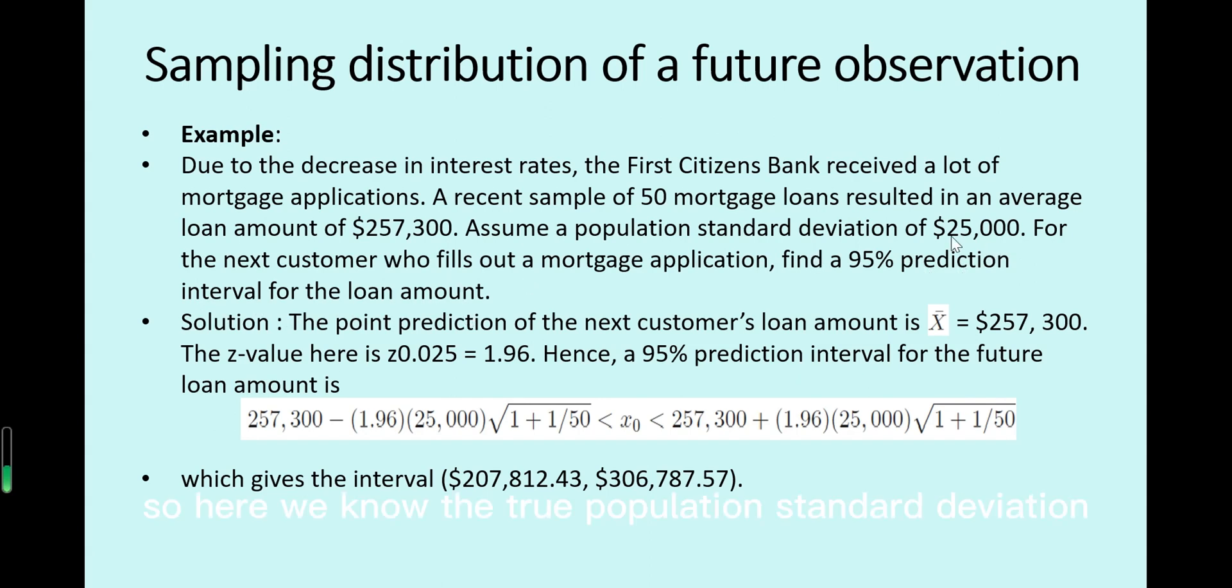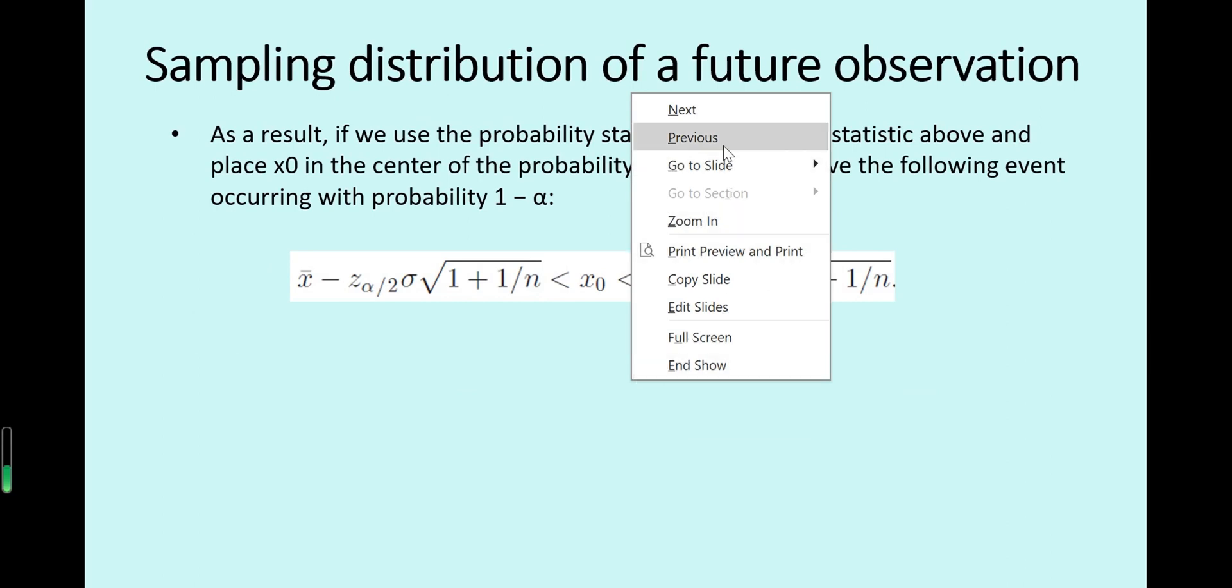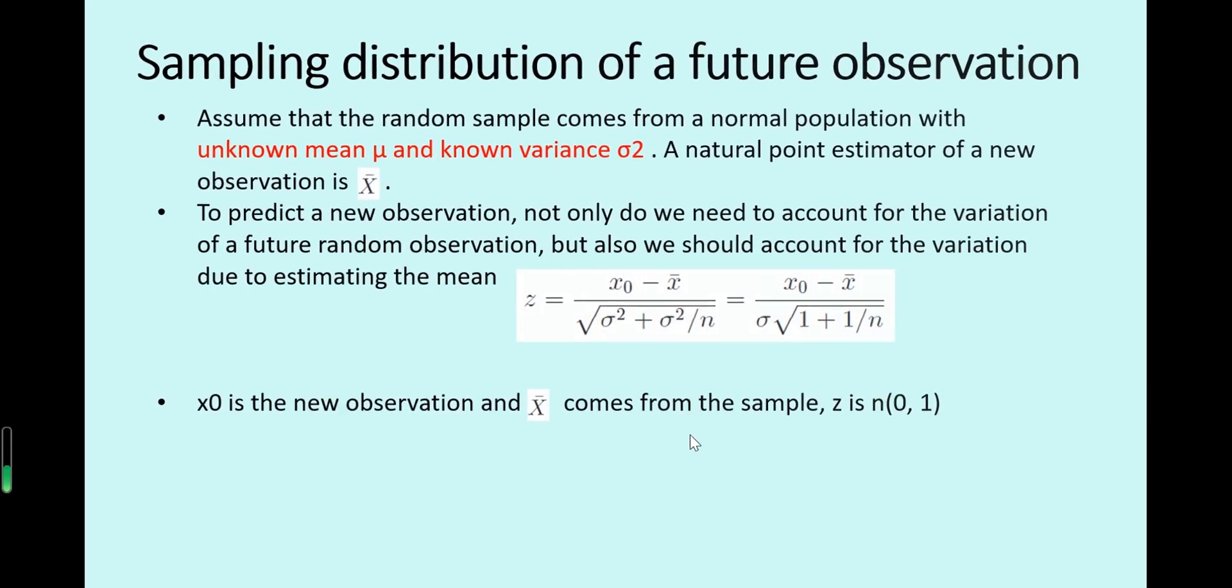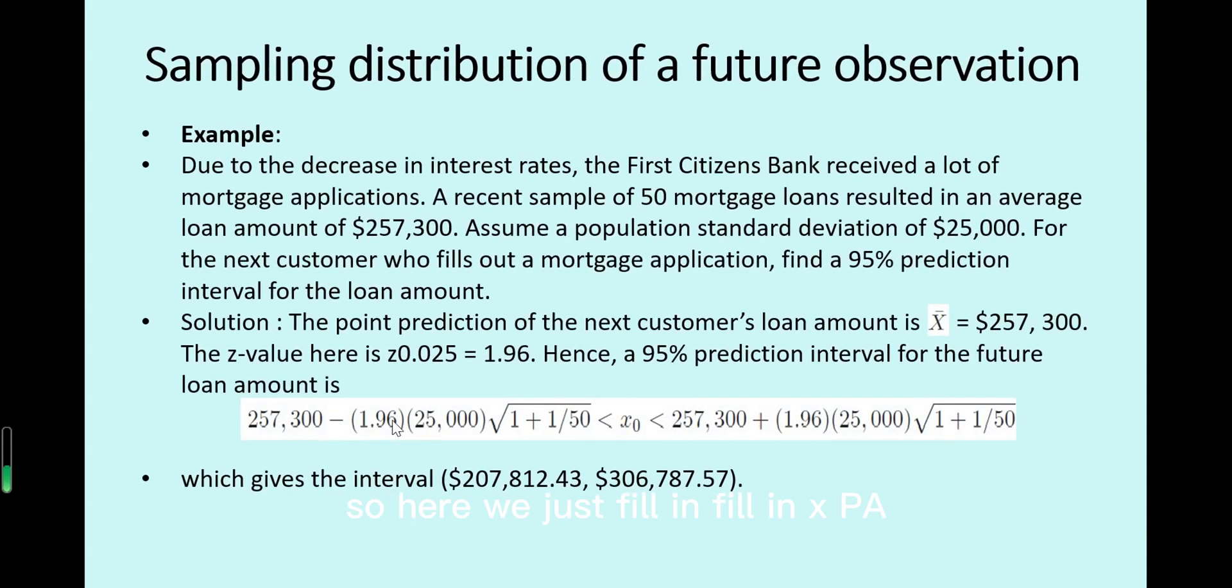So here we know the true population standard deviation, and we get a sample average of 50 samples. Then we have to find the 95% prediction interval for the future customer. So this is actually one future prediction interval.